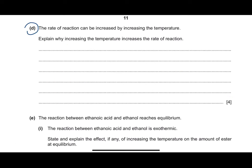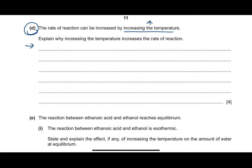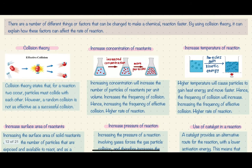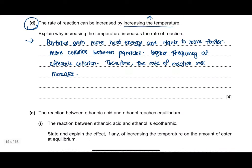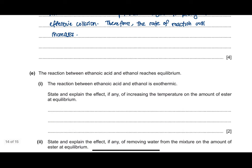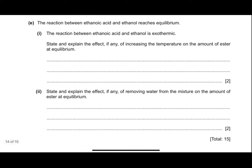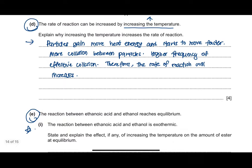For questions about factors affecting the rate of reaction, refer to the six factors and explain using collision theory. Please memorize the collision theory explanation for all five factors that affect the rate of reaction. The next question is about equilibrium, which has been covered in our previous chapters.